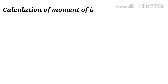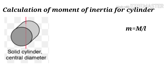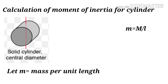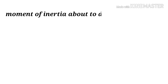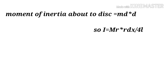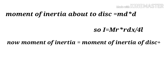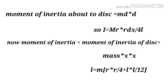For a cylinder: small m is the mass per unit area, capital M is the mass of the cylinder. The mass per unit length is M divided by l. The moment of inertia about this disk equals m into r squared, where d is the diameter and r is the radius.